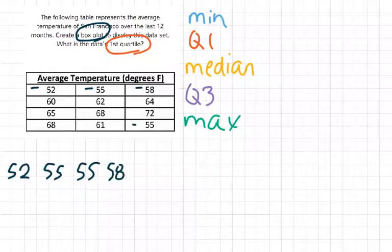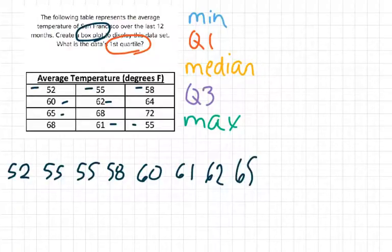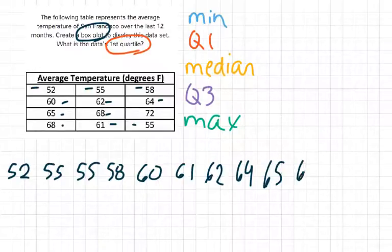And then I have a 58, 68, and then it looks like 60, and 61, 62, 65. Oh, no, not 65 yet. I see 64. So 64, and then 65, 65, and then 2 68s, and then finally 72.